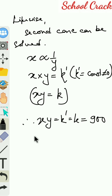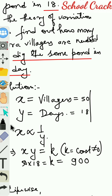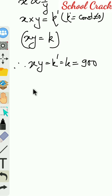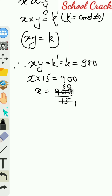Now substituting the values for the second case: the number of days y equals 15, and x is unknown. So x multiplied by 15 equals 900. Therefore x equals 900 divided by 15, which gives x equals 60.